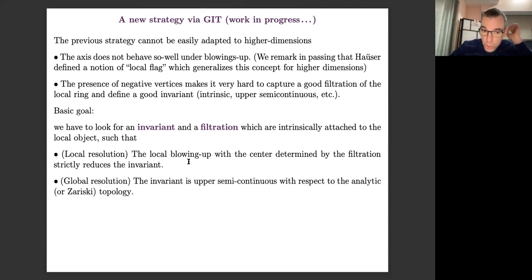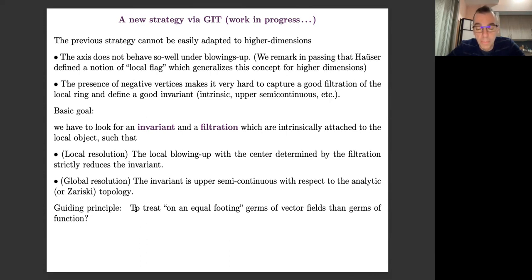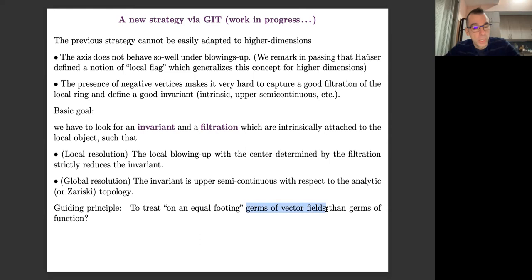For the global resolution, we'd like this invariant to be upper semi-continuous with respect to the analytic or algebraic topology, depending on the category you work in. Now I stated some new guiding principle: I don't think you have to treat separately the case of germs of vector fields and germs of functions. My strategy would like to treat both of these objects on an equal footing — the same strategy should work for both.